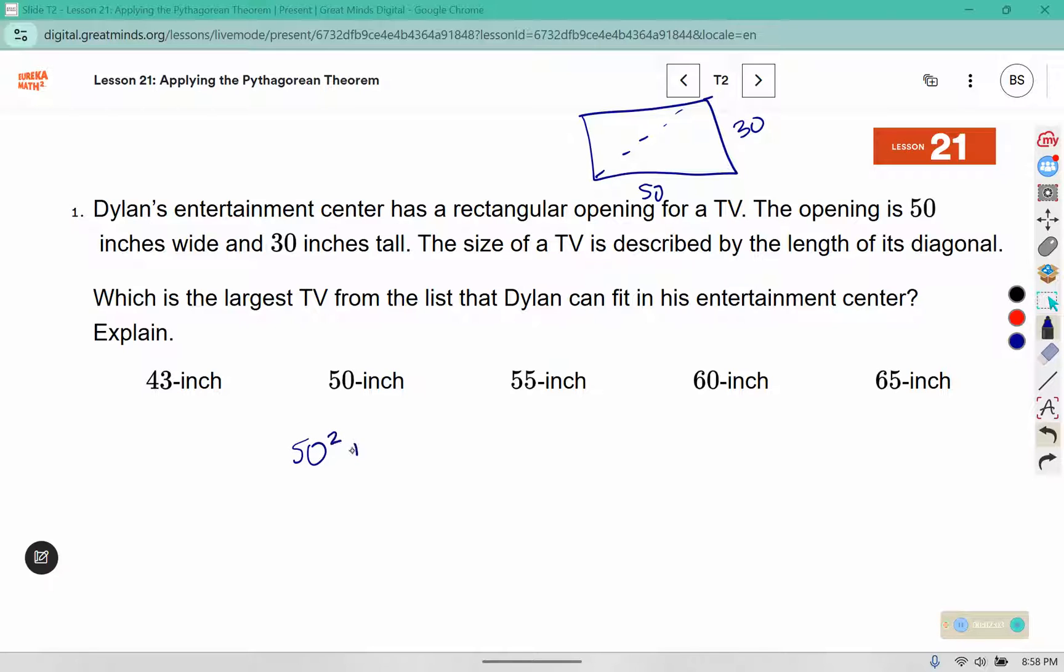So if I had 50 squared plus 30 squared, that would give me the length of the diagonal squared, because this is a right angle in a rectangular entertainment center. So 50 squared, that would be 50 times 50 or 2,500. 30 squared is 900.